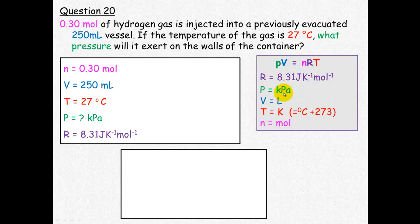Double check your units. Moles are in mole. Volume needs to be in liters, so convert to 0.25 liters. Temperature needs to be in Kelvin, so add 273 to get 300 Kelvin. Pressure will be in kilopascals.